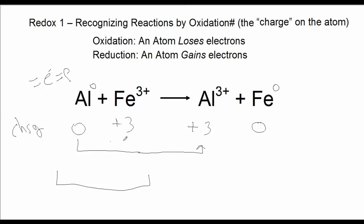Let's see what happened to iron. Iron went from positive 3 to zero, so it must have gained three electrons. It must have gained three negative charges to bring it to zero.